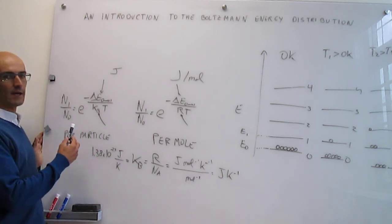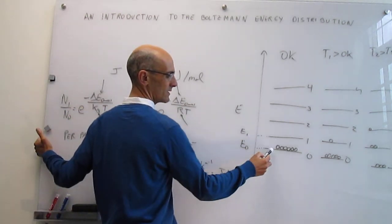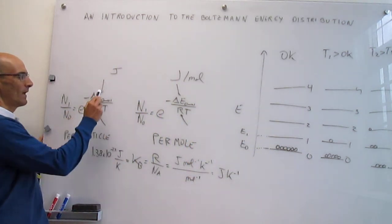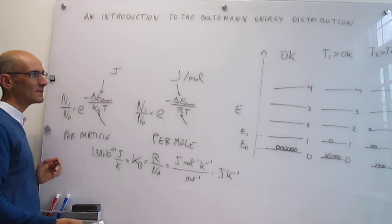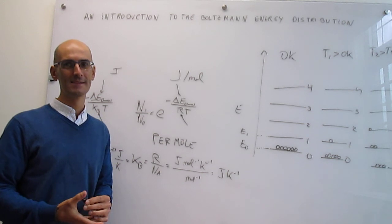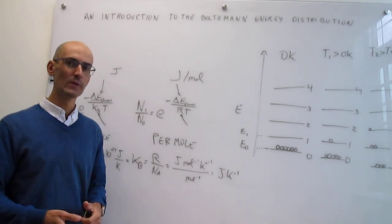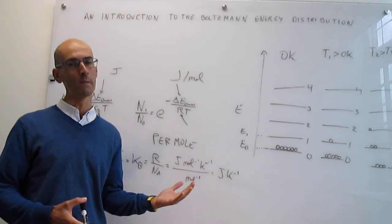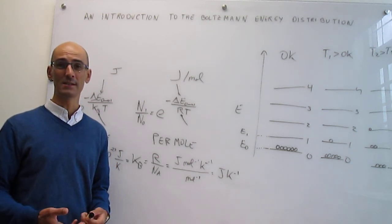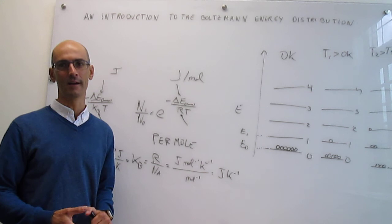To wrap up, notice that we could apply this to any two states — here we've chosen N1 over N0, but we could also calculate N2 versus N0, or N4 versus N2. The only things that change are the subscripts and the energy difference between the states involved. This material will be more important as we move on to quantum mechanics in the second semester of this course, but it's also important here as we introduce fundamentals of thermodynamics, since this provides a quantum version of how energy is absorbed in molecules — and energy transformation is really the body of thermodynamics.